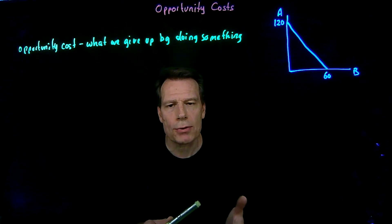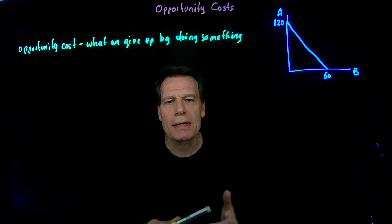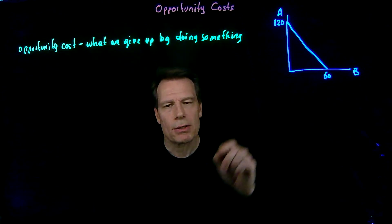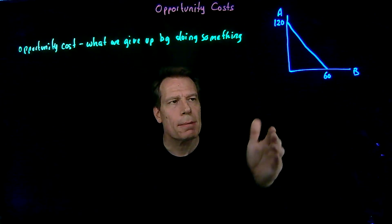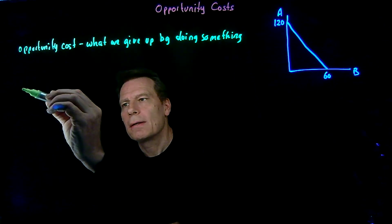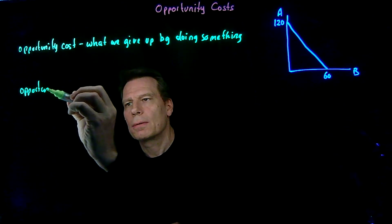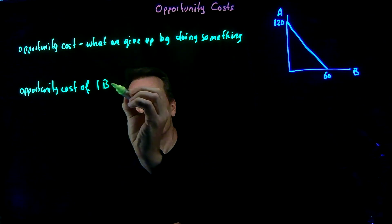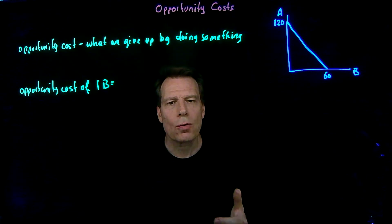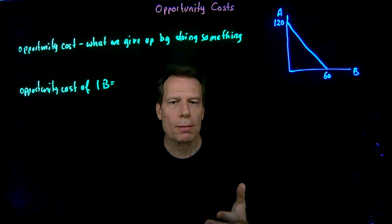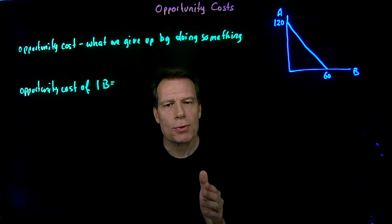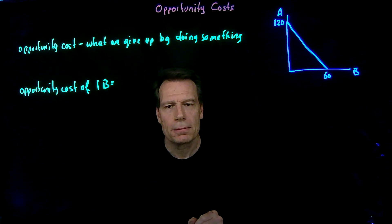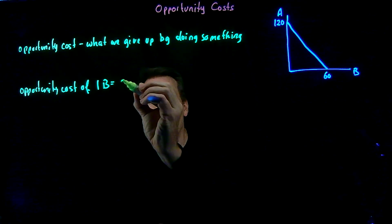Because every decision involves a cost, every decision involves some economics. Now let's turn the idea of opportunity costs to the production possibility curve. Let's think about this economy and what is the opportunity cost of producing one banana. Workers in this economy are twice as productive at producing apples as they are at producing bananas, so whenever we produce an additional banana, we're giving up producing two apples. The opportunity cost of one banana is two apples.